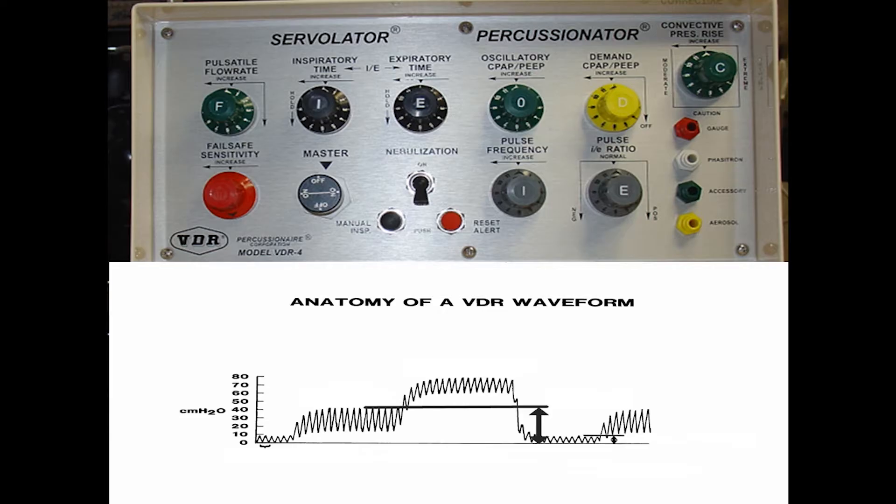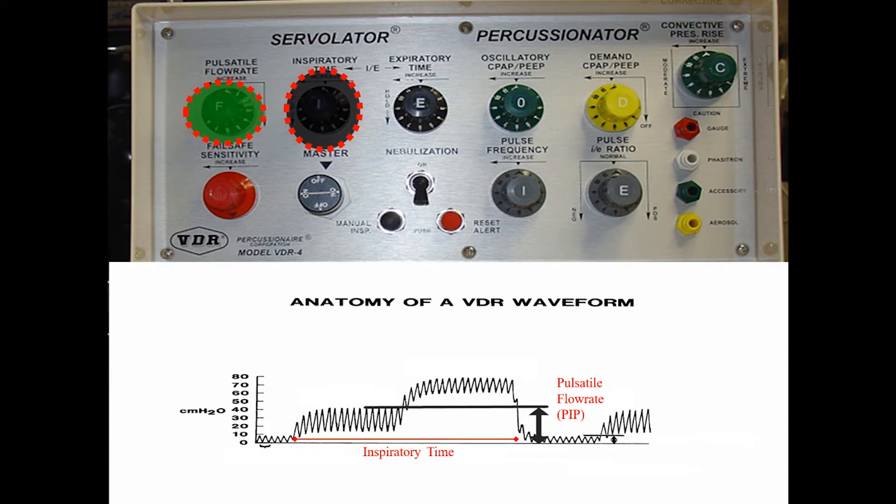So the first thing is every ventilator has an on-off control. My first clinical adjustment is pulsatile flow rate. I can think of this as analogous to a PIP. It is not PIP, but it's analogous to a PIP so that I can think of adjustment. Pulsatile flow rate describes the inspiratory flow coming through the ventilator during the inspiratory cycle. And in fact, I set an inspiratory time to deliver this pulsatile flow rate. And so then we have expiratory time. And that simply controls oscillatory CPAP or PEEP. And I'm just going to set a certain amount of time to deliver the expiratory flow.